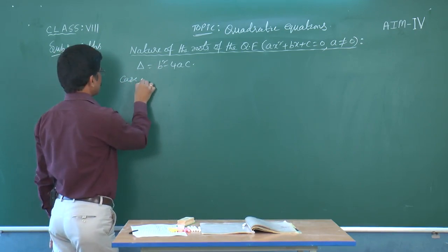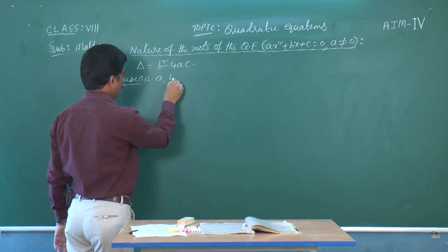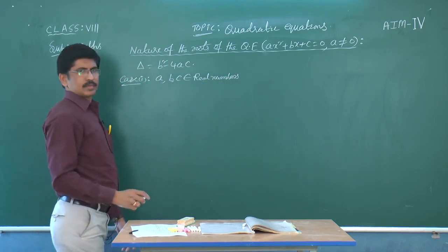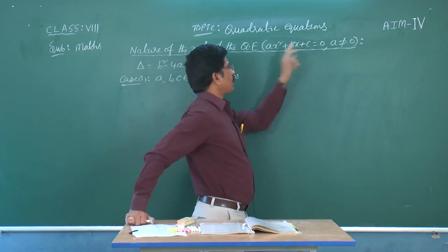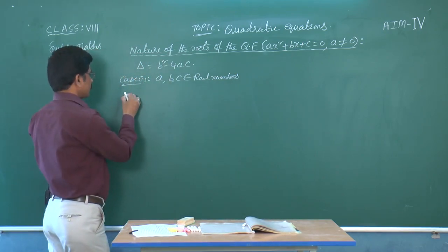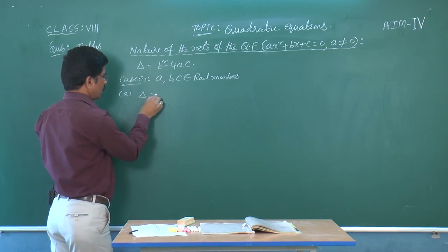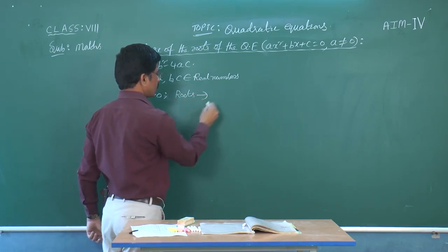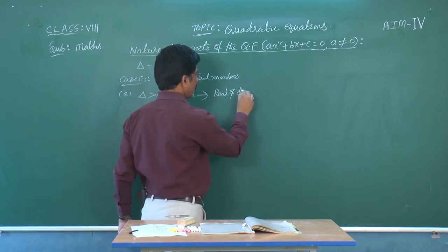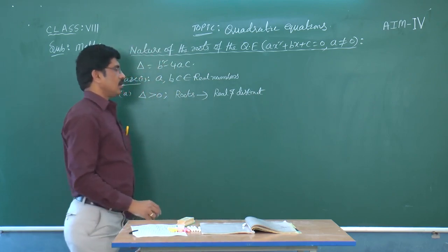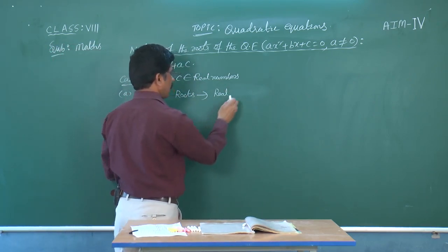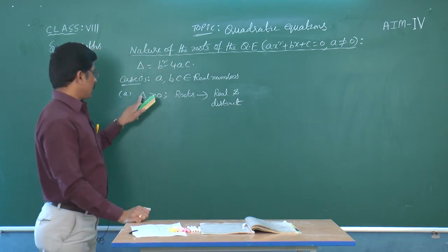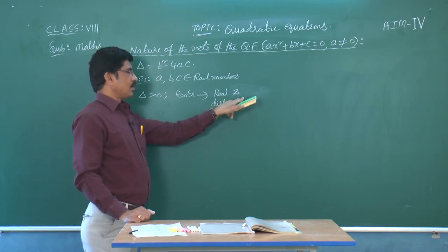Case 1: In the quadratic equation, the coefficients A, B, C belong to real numbers. The first sub-case: if delta is greater than 0, the roots are real and distinct.